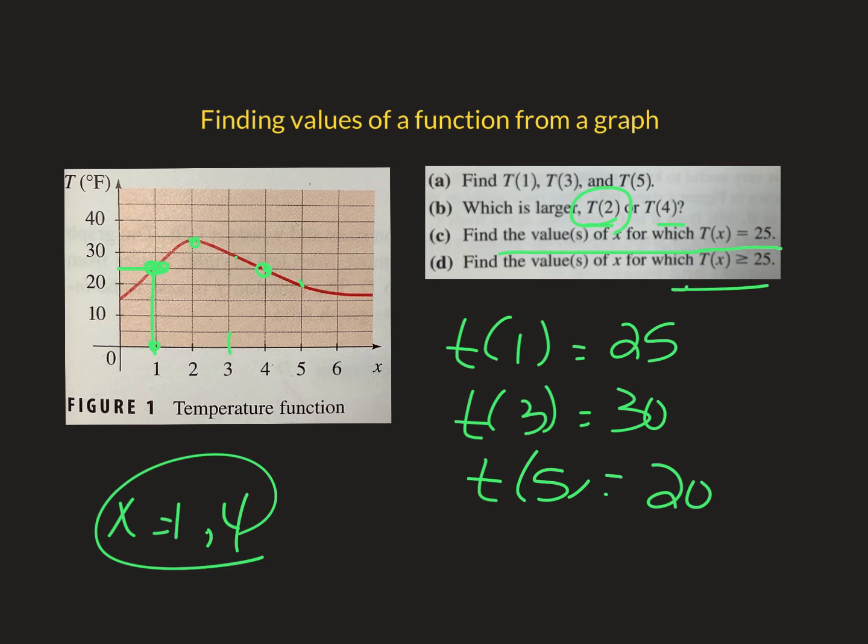Part D says where is it bigger than 25. So if I drew a line on it at 25, I'm looking for all the values in between there, which is between 1 and 4. So I would say between 1 and 4.